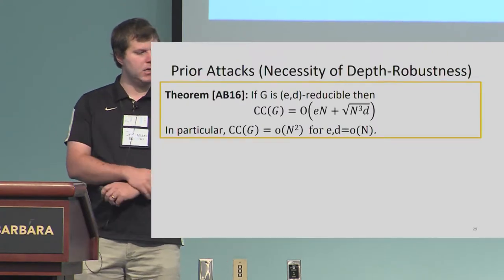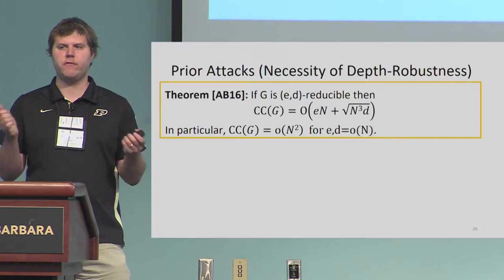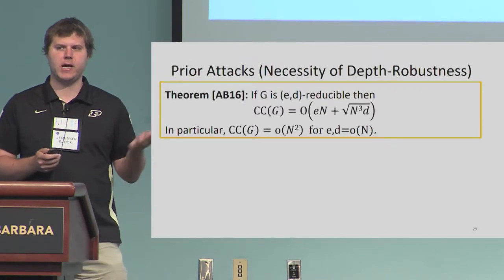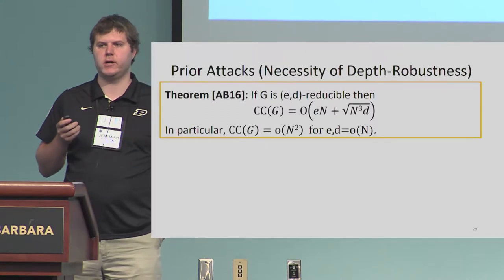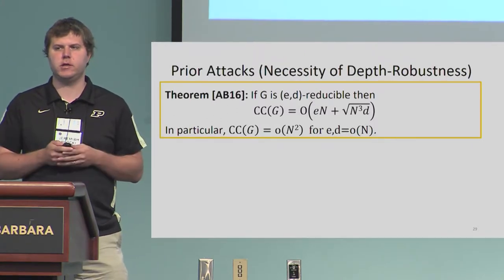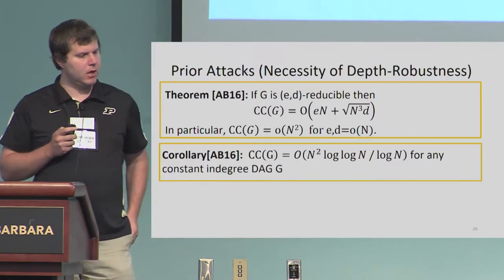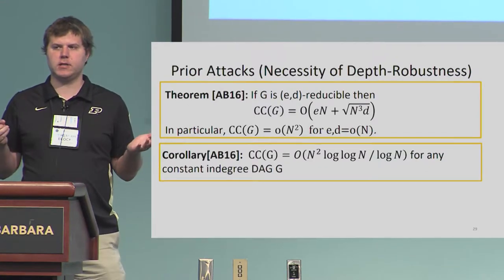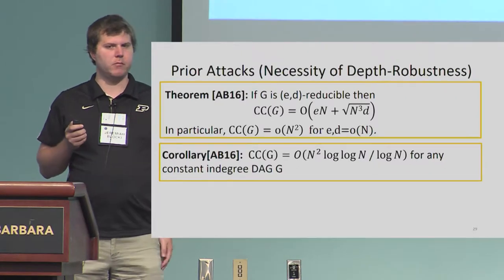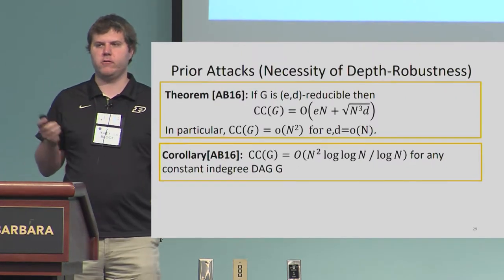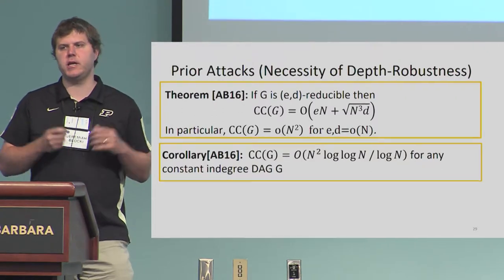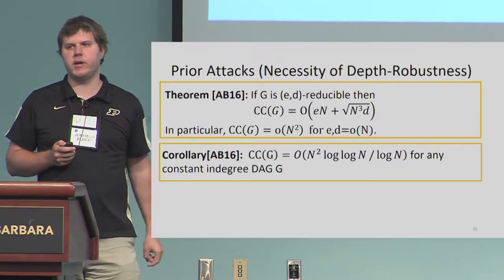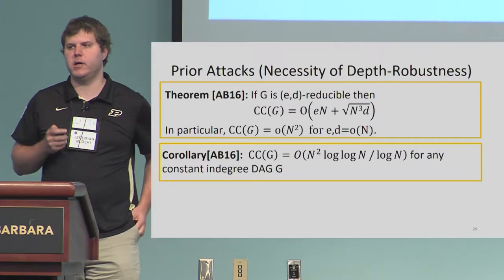At Crypto 2016, we gave an attack showing that if your graph is not depth-robust, we can get a parallel pebbling attack with cumulative memory complexity little-o of n-squared — so the attack quality is going to be omega of 1. A corollary is that any directed acyclic graph with in-degree 2 has cumulative memory complexity at most n-squared log log n over log n. This general upper bound actually separates data-independent memory-hard functions from data-dependent memory-hard functions: data-dependent can get all the way up to n-squared, but that's not possible for data-independent.